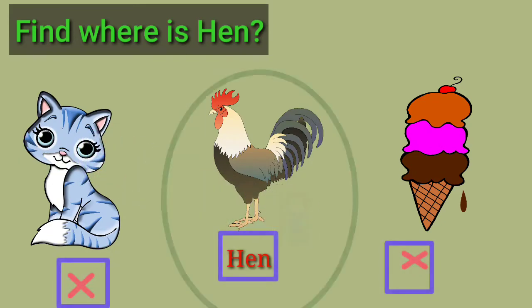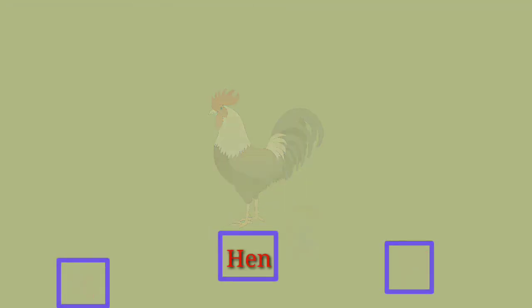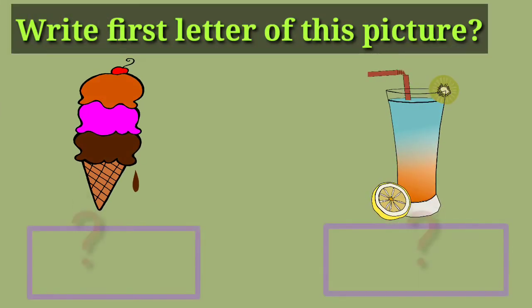F, correct. Write first letter of this picture. I, Ice cream. J, Juice.